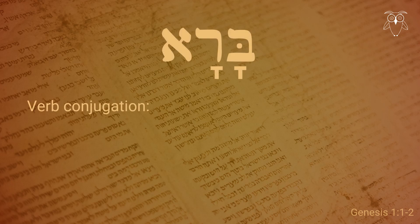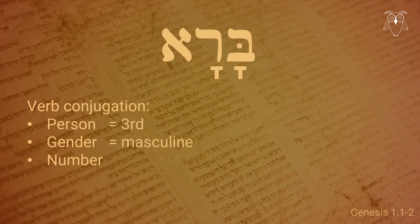In Hebrew, verbs are also conjugated for person — first, second, or third — gender, masculine or feminine, and number, singular or plural, based on the subject. In this case, Bara is third person, masculine, and singular, meaning we expect the subject to be grammatically 'he.'